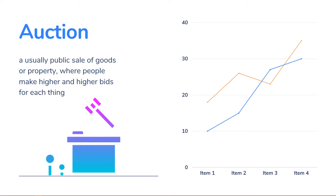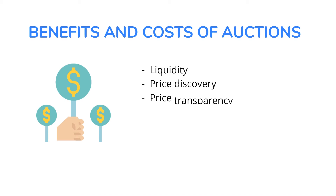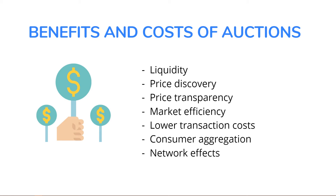Auctions are usually public sales of goods or properties where people make higher and higher bids for each item. In consumer-to-consumer (C2C) auctions, the auction site acts as an intermediary market maker, providing a platform where customers can discover prices and trade. In business-to-consumer (B2C) auctions, a business sells goods using various dynamic pricing models. The benefits of electronic auctions include liquidity — sellers can find buyers and buyers can find sellers anywhere around the globe.